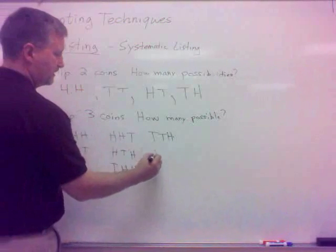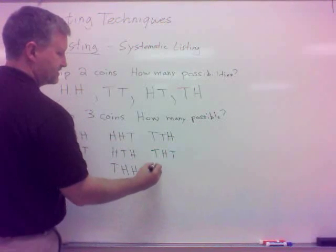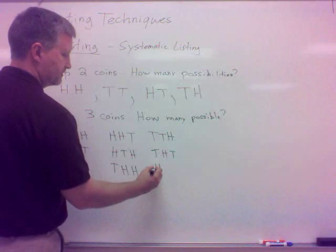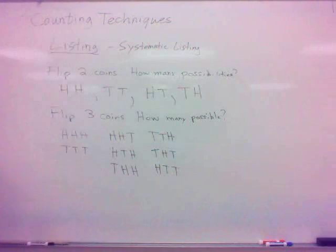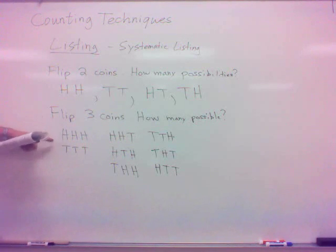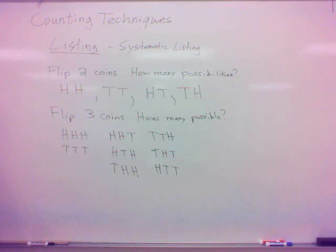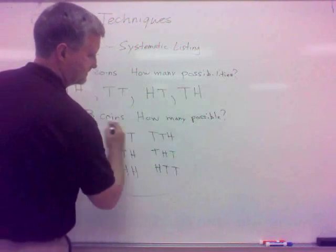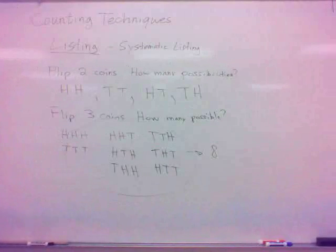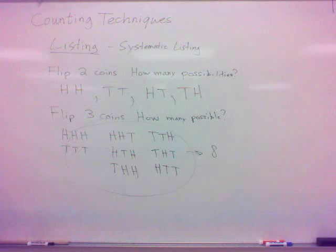That would be three different ones. All right, what else could I have? Two tails, one head. And that could occur different ways. Tails, heads, tails, or heads, tails, tails. That would about cover it, wouldn't it? Can you think of any others? We've got three heads, three tails, two heads one tail, two tails one head. That's about it. No other options available. So how many are there? Eight all together.